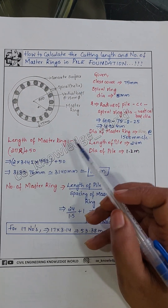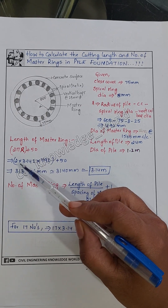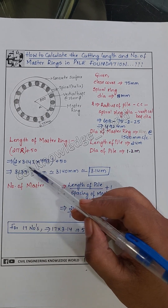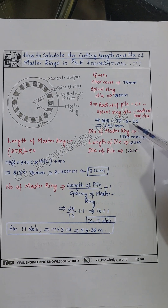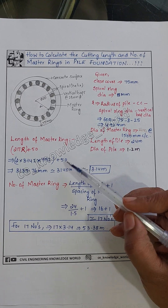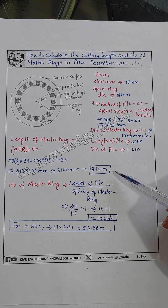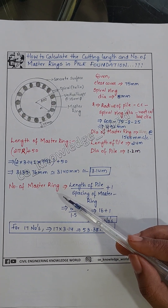The formula to calculate the length of one master ring is: 2πr + 50. So 2 × 3.14 × 492 + 50. If we calculate this, we get 3.14 meters for the length of one master ring.